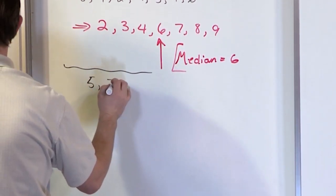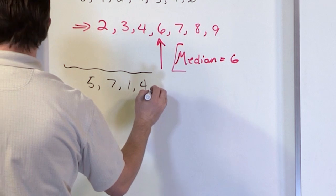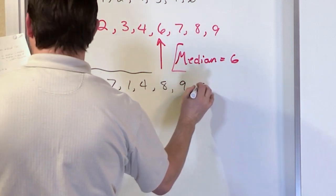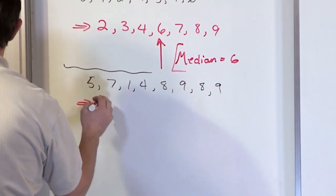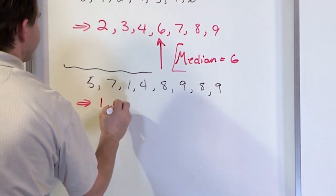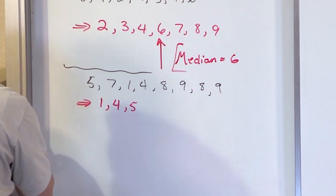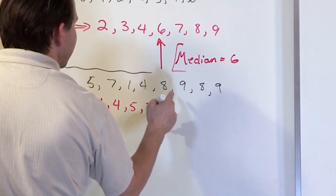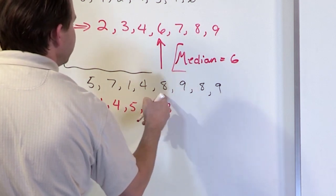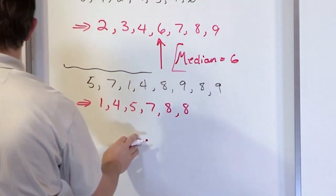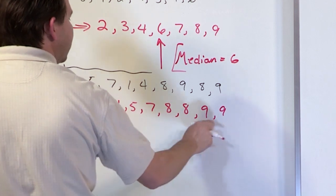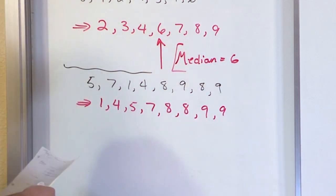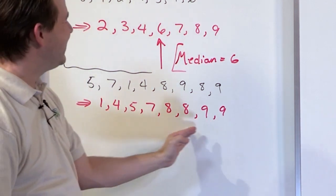What if I have 5, 7, 1, 4, 8, 9, 8, and 9. And I want to find the median of that. First thing we do is we order the data set. So it's going to be 1, 4, 5. Then we have a 7. Then we have an 8. But notice we have two 8s. So I have another 8. And then I have a 9 here and another 9. So when you have repeated values, that's okay. You still need to list everything. It's just that you list them in ascending order.